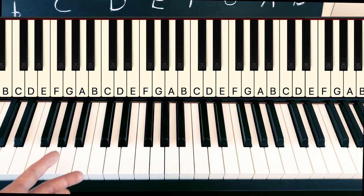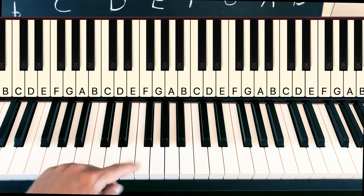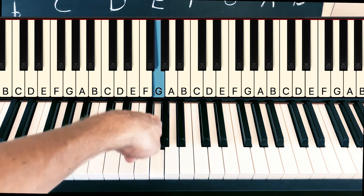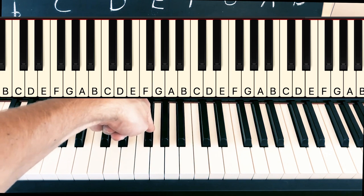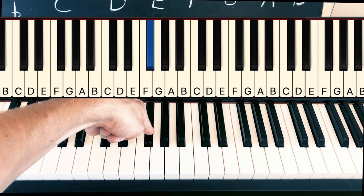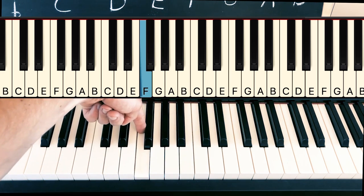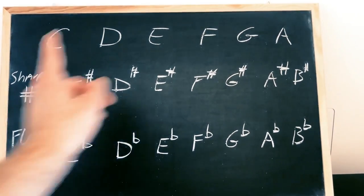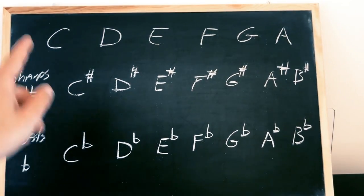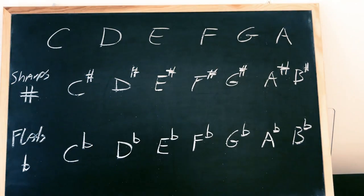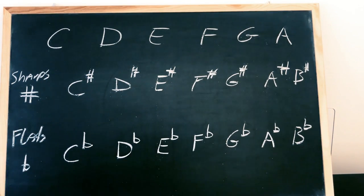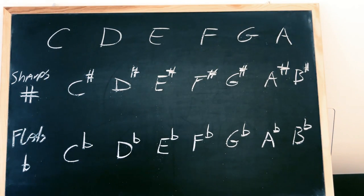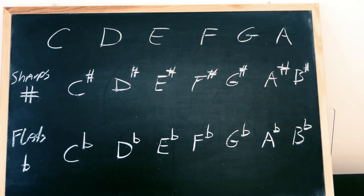Now obviously most of these notes carry double names, because I can go down from G to G flat, but I could also start on F and go up to F sharp — it's the same key. So to sum up, we have 21 different note names: C, D, E, F, G, A, B — all of the white notes — and then we have the sharps and the flats, seven apiece.